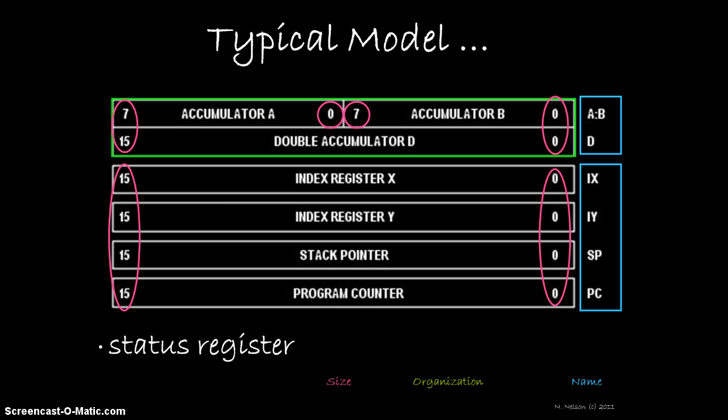Each of these pointer registers is 16-bits wide and is allocated its own physical space in the CPU. We'll talk about what these registers are used for in a minute.